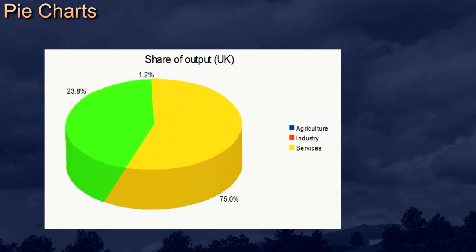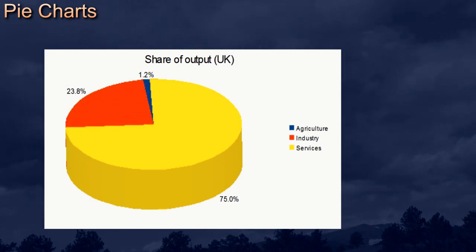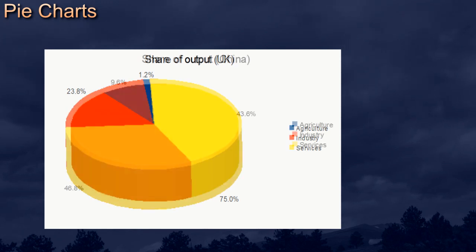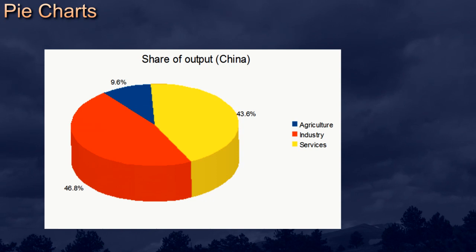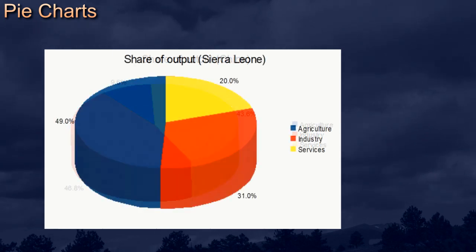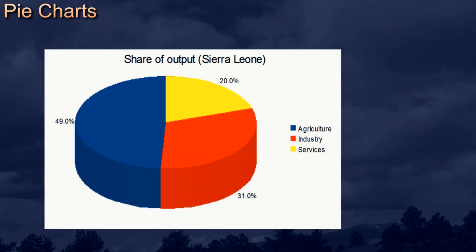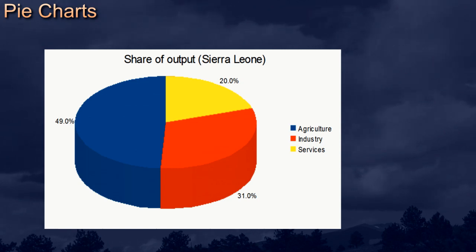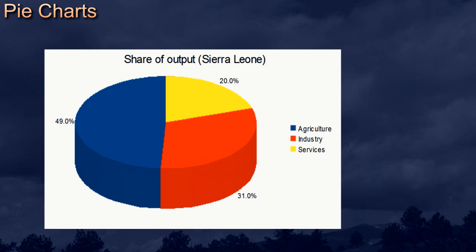Finally, consider Sierra Leone, a relatively less developed economy. The pie chart is the same size as for the UK and China, despite the fact that it's a small economy. Each pie chart covers an output level of 100%, so whatever the size of the economy, the chart emphasizes the different proportions of output. Agriculture is easily the biggest sector in Sierra Leone. If you're nervous about percentages, we devote a whole film to the topic later in the series.